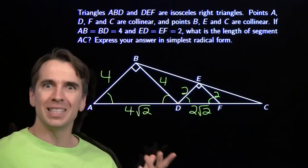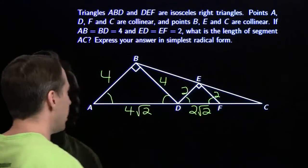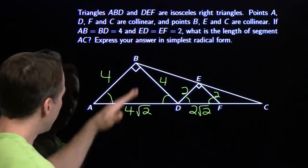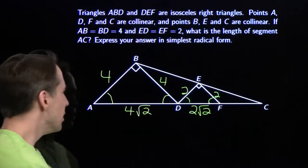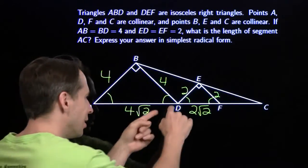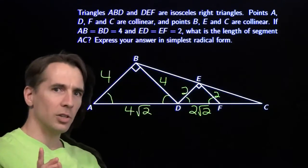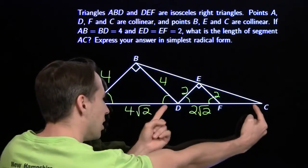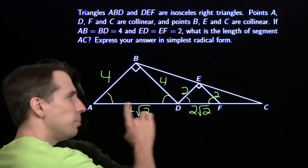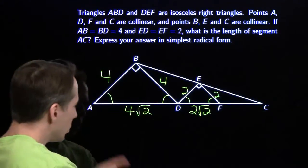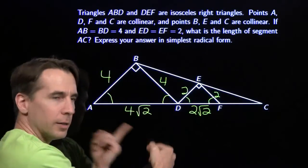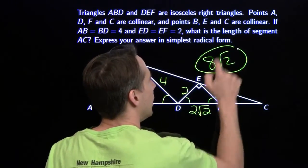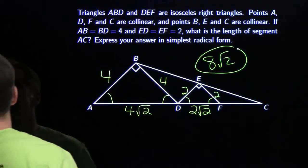By marking these equal angles in our diagram, we can see parallel lines. Because this angle equals this angle, AB and DE are parallel. Parallel lines mean similar triangles. Because AB is parallel to DE, triangle ABC is similar to triangle DEC. AB is double DE, so the sides of ABC are twice the corresponding sides of DEC. AC is double DC, which means D is the midpoint of AC, so AC is double AD — giving us 8 root 2. Parallel lines mean similar triangles.